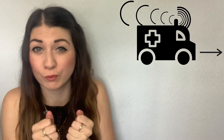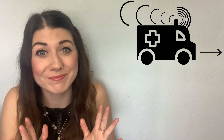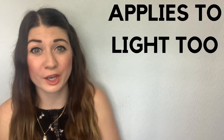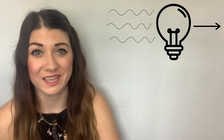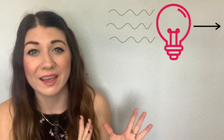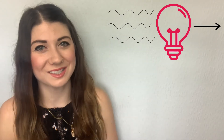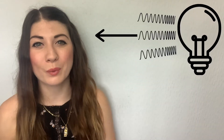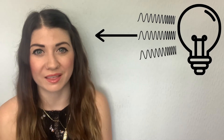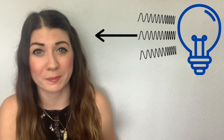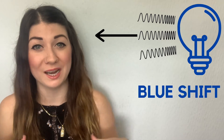Think back to the Doppler shift with sound waves bunching up in front of the source and spreading out behind it — well, this applies to light too. So when a light source is moving away from you, the waves will have a lower frequency and a longer wavelength, shifting towards the red end of the spectrum and appearing more red. This is called redshift. When a light source is moving towards you, the waves have a higher frequency and shorter wavelength, moving towards the blue end of the spectrum and appearing bluer. This is called blueshift.